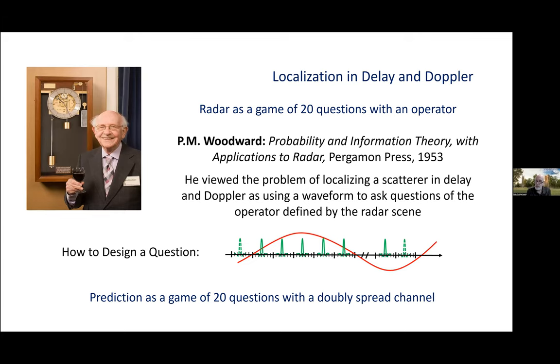He was a very distinguished radar engineer, also a virtuoso clockmaker. And in 1953, only five years after Shannon created information theory, he described how to think of radar in information-theoretic terms.